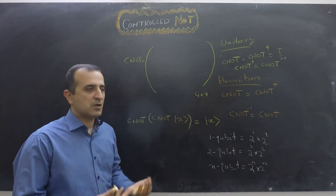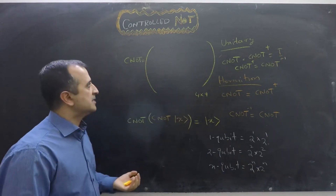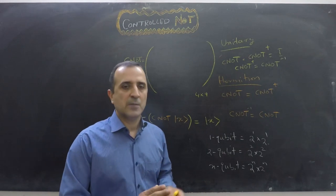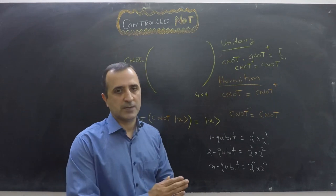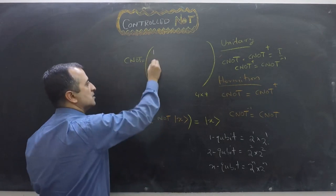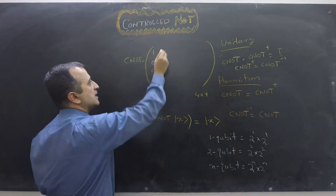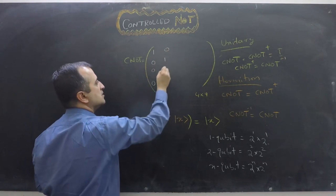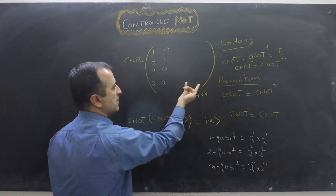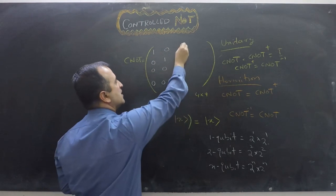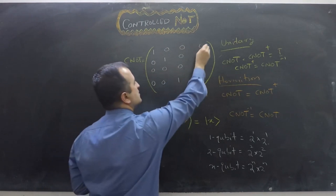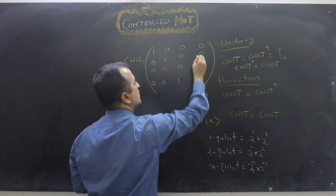This 4×4 CNOT matrix is very similar to the identity matrix. The first two columns are the same as the identity matrix, but the last two columns are swapped. So the first column is [1, 0, 0, 0], the second is [0, 1, 0, 0], the third is [0, 0, 0, 1], and the fourth is [0, 0, 1, 0].